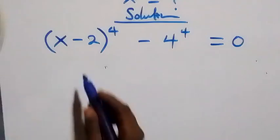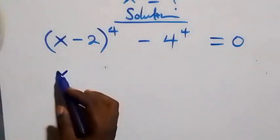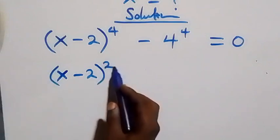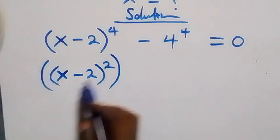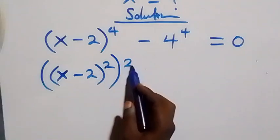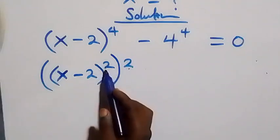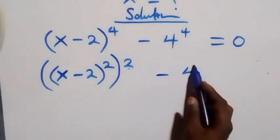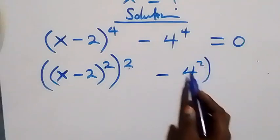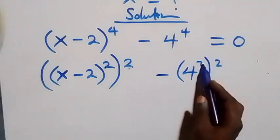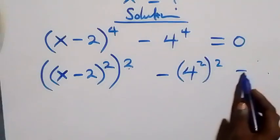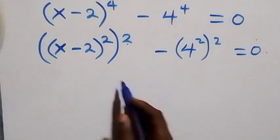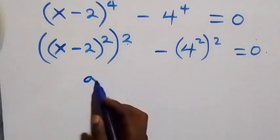We can write this as x minus 2, all raised to the power 2, and raised to the power 2 again. Since this power multiplies 2 times 2 to be 4, minus the same thing here, we have 4 squared, then all squared again, equals to zero.